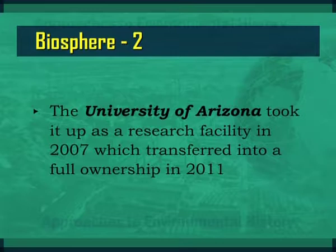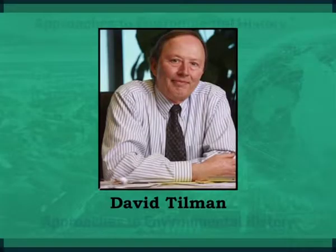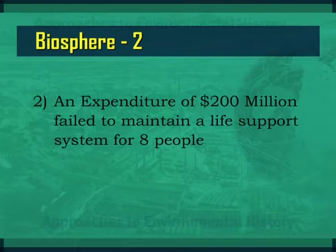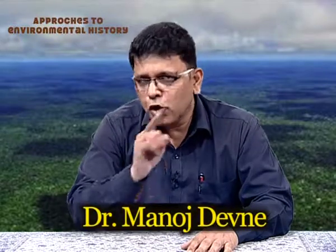Later, the University of Arizona took it up as a research facility in 2007, which transferred into full ownership in 2011. Some interesting remarks of project evaluators Joe Cohen and David Tillman: 'No one yet knows how to engineer systems that provide humans with the life-supporting services that natural ecosystems provide for free.' An expenditure of 200 million dollars failed to maintain a life support system for 8 people. Both statements have enormous environmental value, as this could be the possible future of the earth if we do not pay attention to the warnings. Further, the earth has been accommodating 7 billion human beings since 2011 and the number will soon be 8 billion, but without seeking any economic cost from man — probably at the cost of the environmental health of the planet itself.